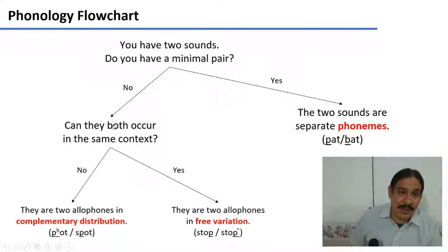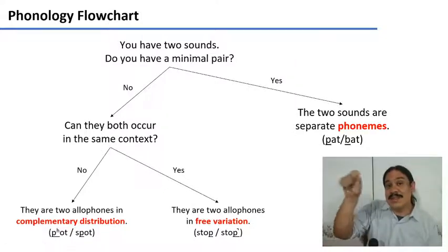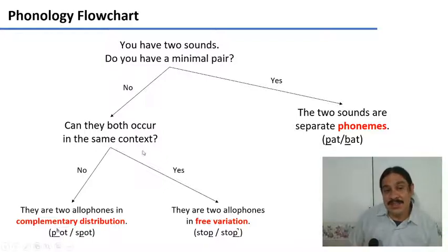If you do not have a minimal pair, then you need to figure out the contexts, the environments where you see these sounds. If they do not occur in the same environments, then they are two allophones in complementary distribution. This would be the aspirated P and P in English because when we see this one, we cannot see the unaspirated one. So there's a clear position where you need the aspirated one and a clear position where you need the unaspirated one.